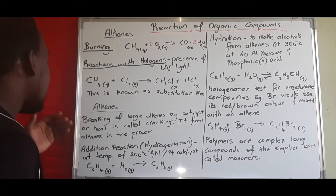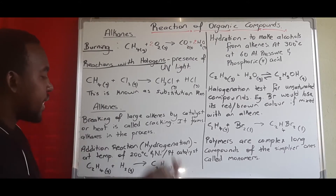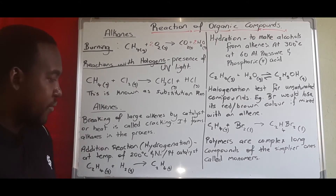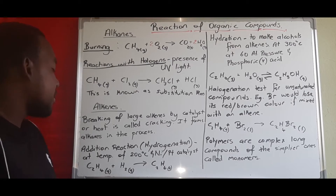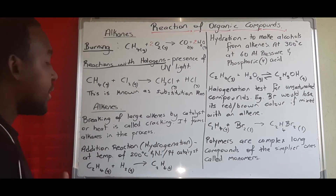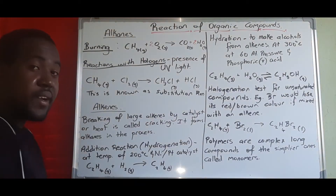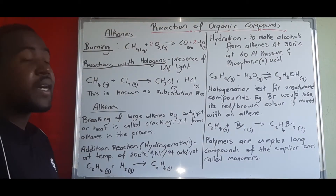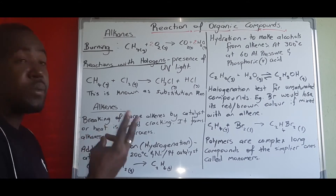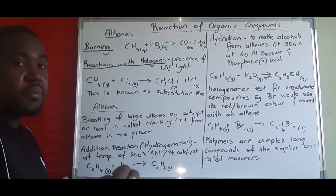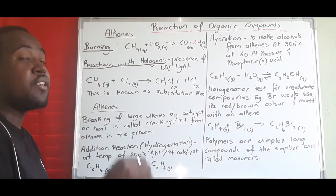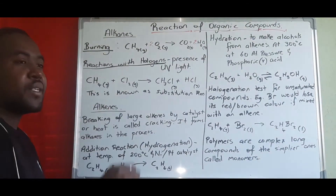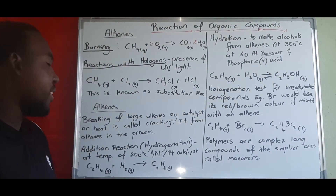Now we look at another reaction of alkenes, which is the addition reaction. Addition means we're going to take something and add it. Remember alkenes have a double bond, so we can break that double bond and we're free to add things to it — that's why it's called an addition reaction.